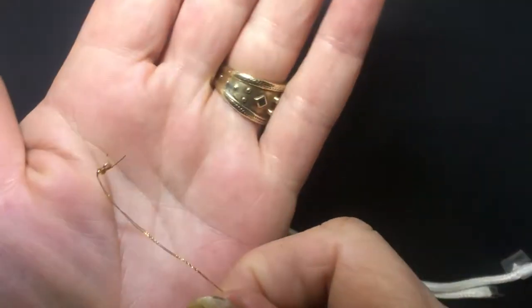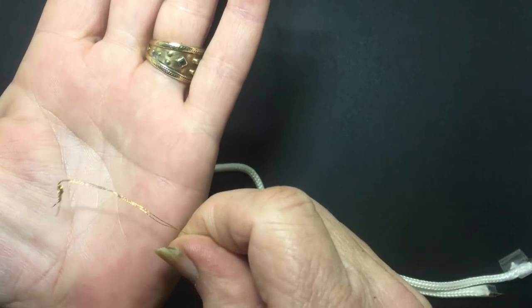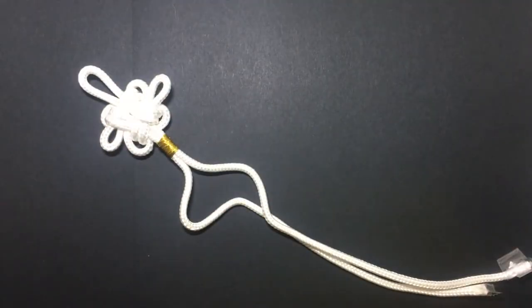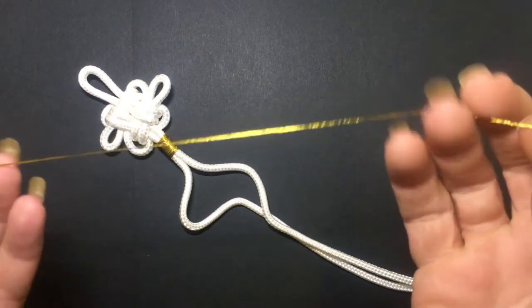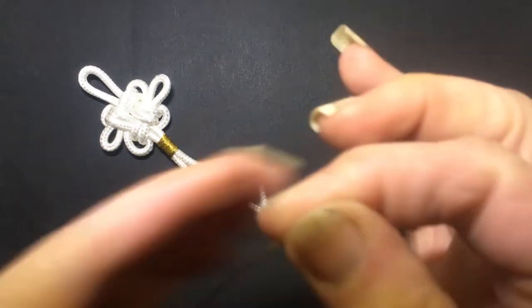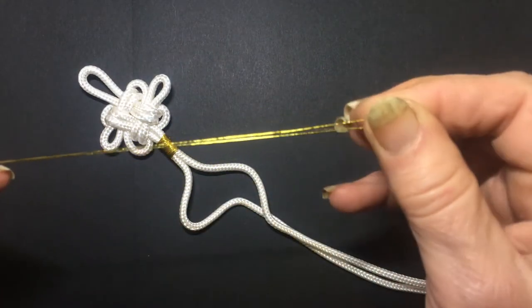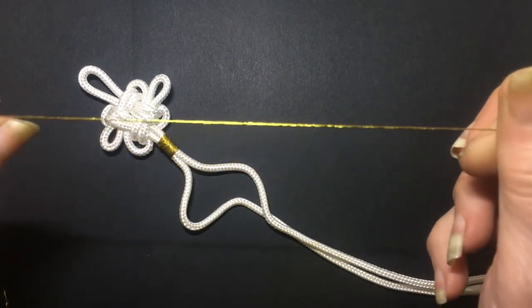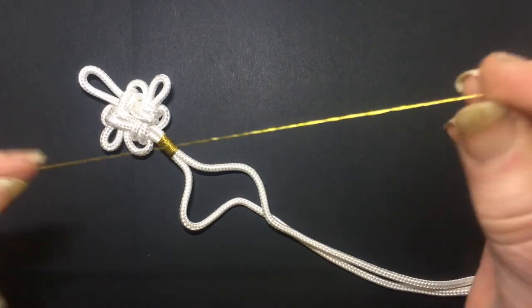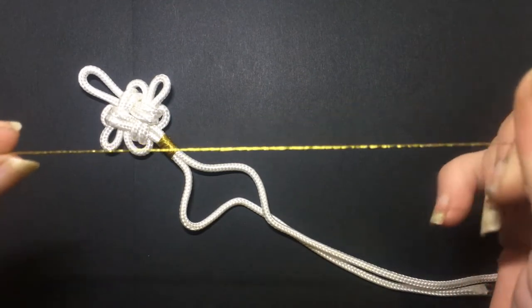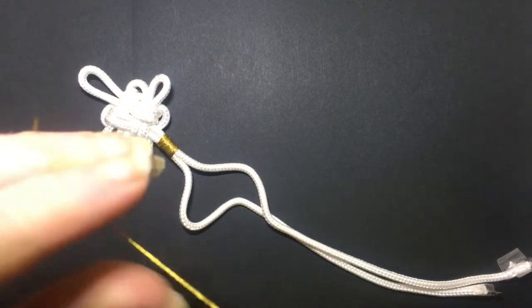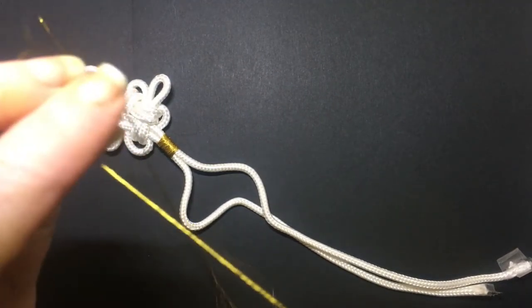Then double it over again. Once I've done the second double over, you can see it's starting to pick up, make it nice and thick. Then you twirl it from both directions in opposite directions. So one you're rotating forward, the other one rotating backwards. And just go and do the whole string, the whole thread like that.